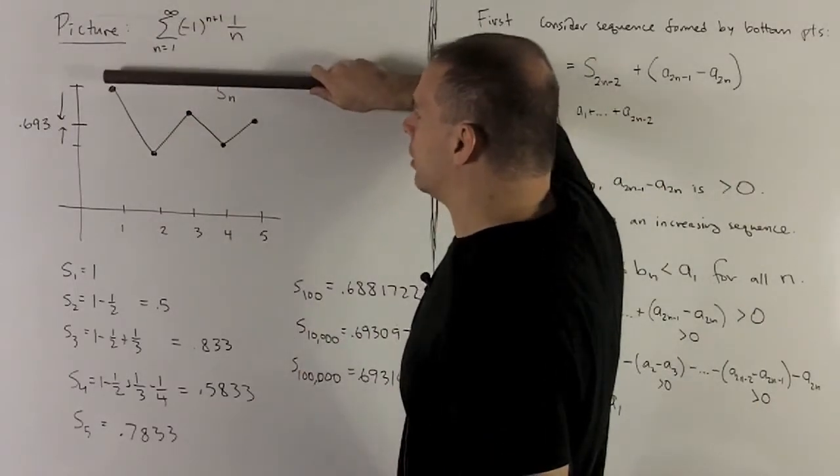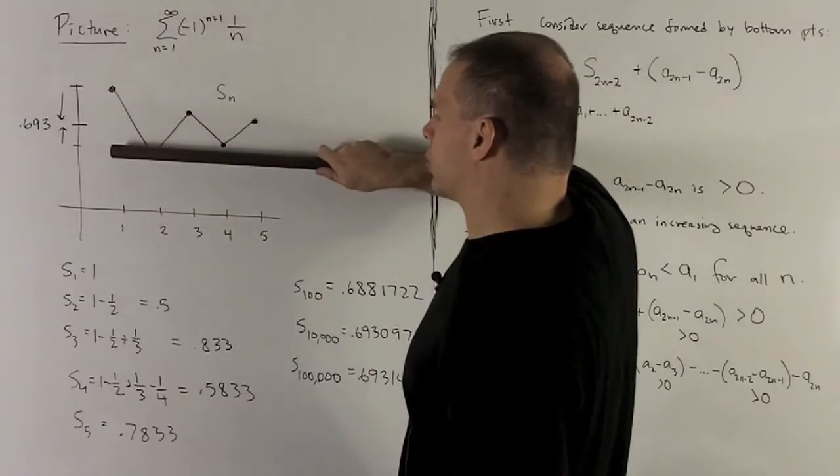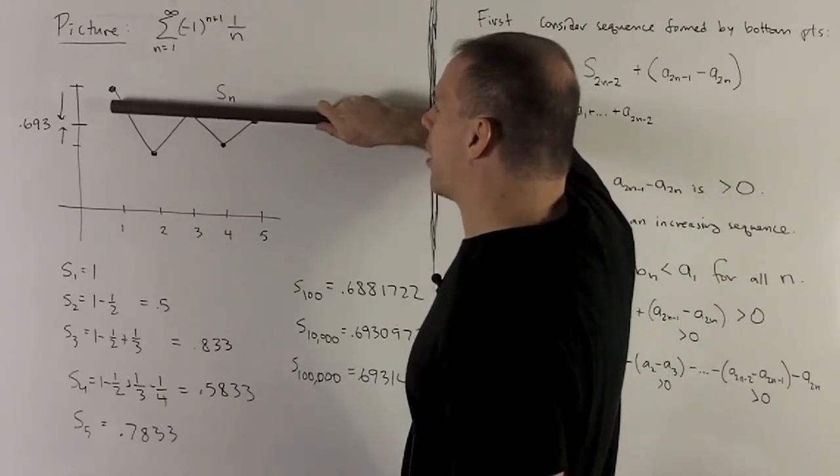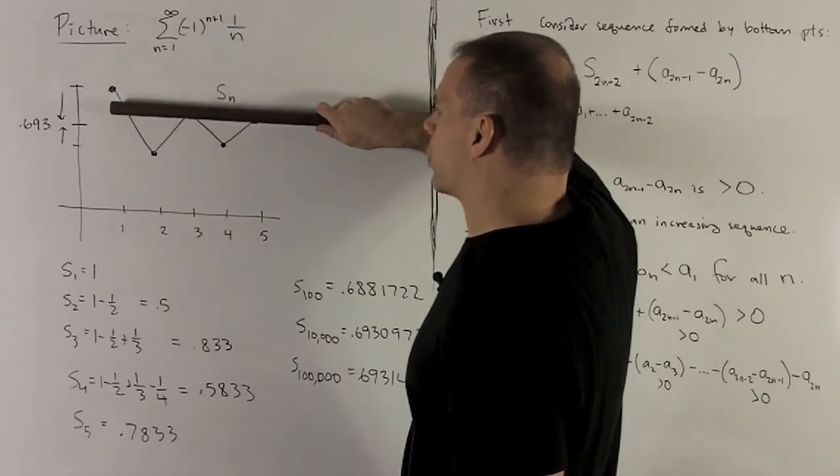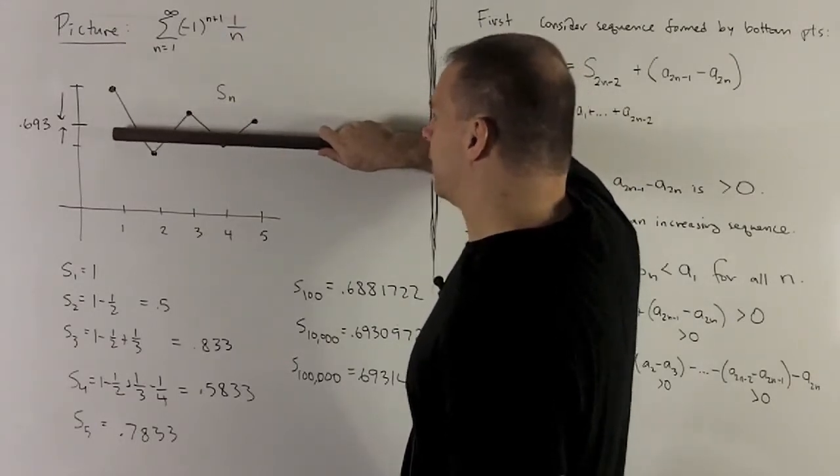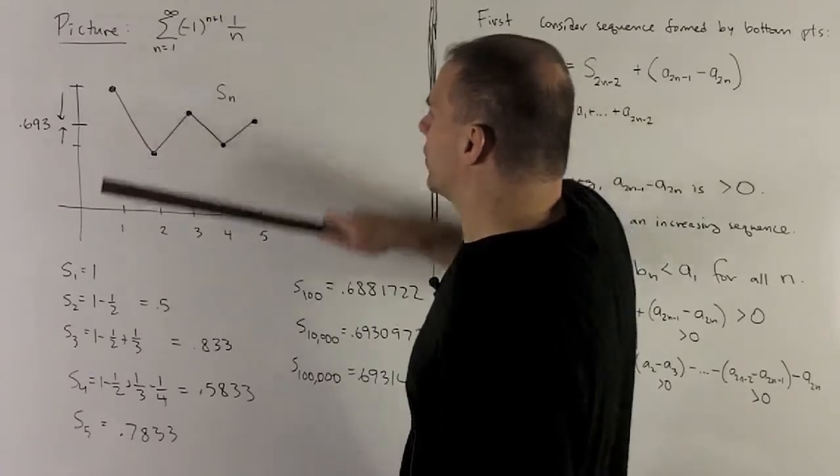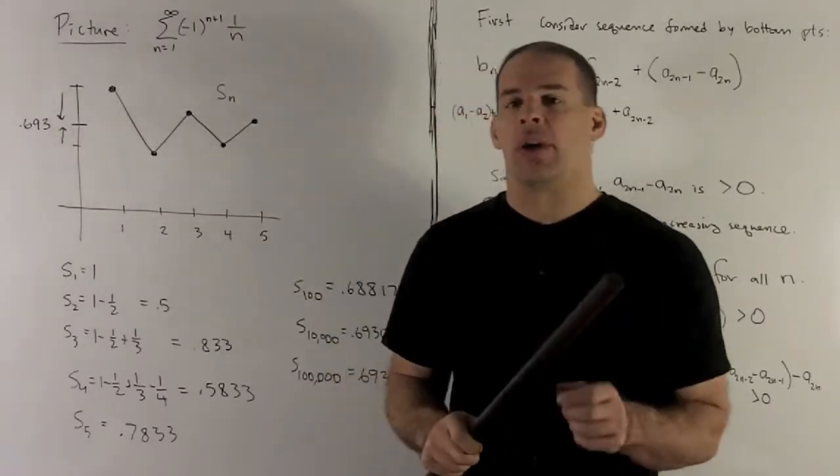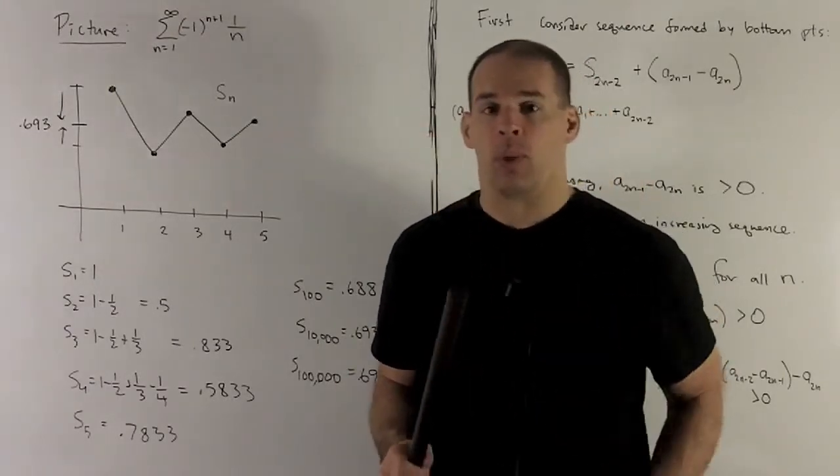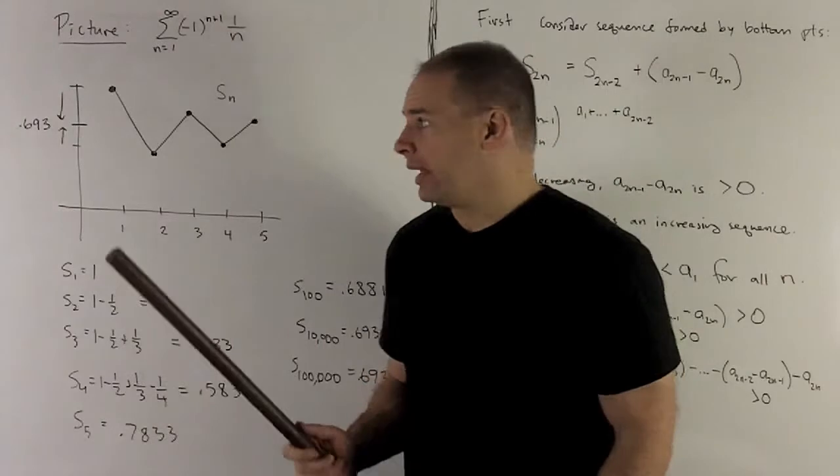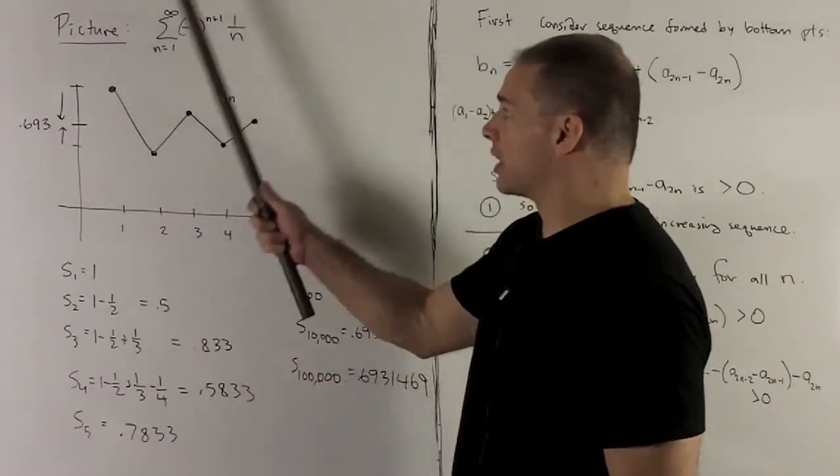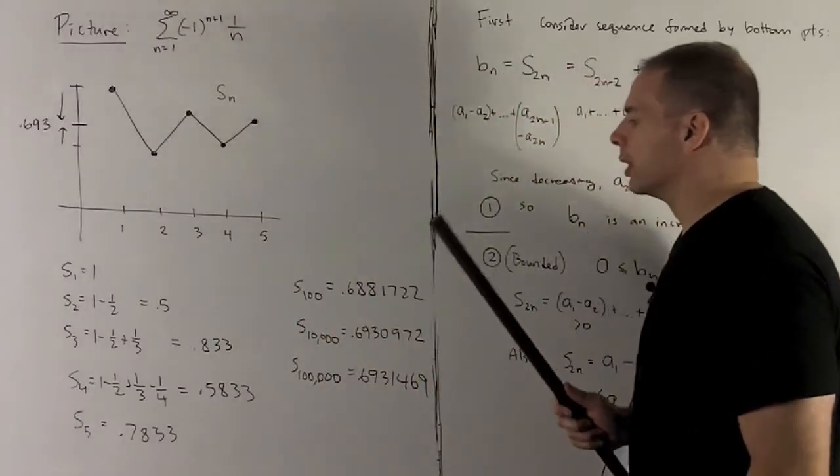But the main thing that's happening is, we start at a_1. Subtracting off a_2 gets us to there. Then when I add a_3, it comes back up, but not all the way. Subtract off a quarter, it comes down, but not all the way. Add a fifth, it goes back up, but not all the way. So the idea is, each term is going to bring us a little bit closer to that limit that we're going to wind up at. In this case, you're looking at roughly 0.693 for the sum of this series.